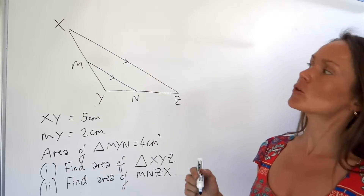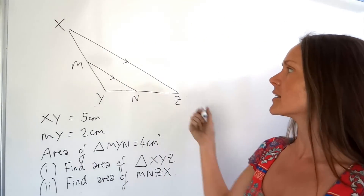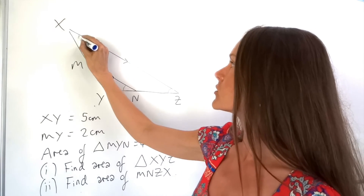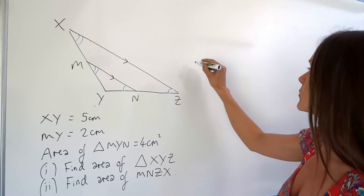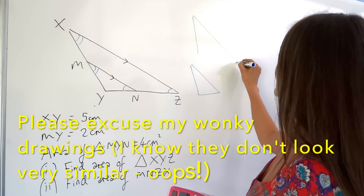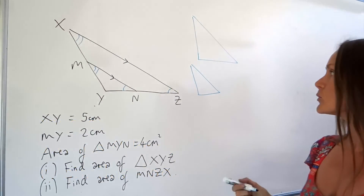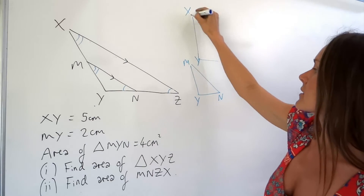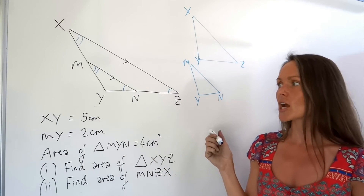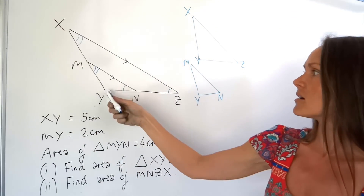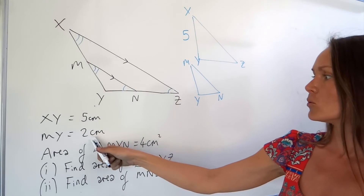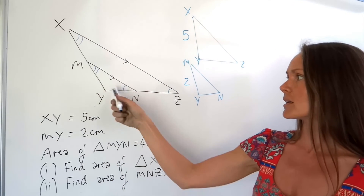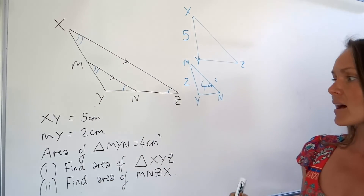On to the last question: I've got two similar triangles because there's a set of parallel lines in the diagram, meaning corresponding angles match up. I'll redraw the two similar triangles separately to make the question easier to understand — the small triangle NYN and the large one XYZ. The length XY on the big triangle is 5 centimeters, MY on the small one is 2 centimeters, and the area of the small triangle NYN is 4 centimeters squared.